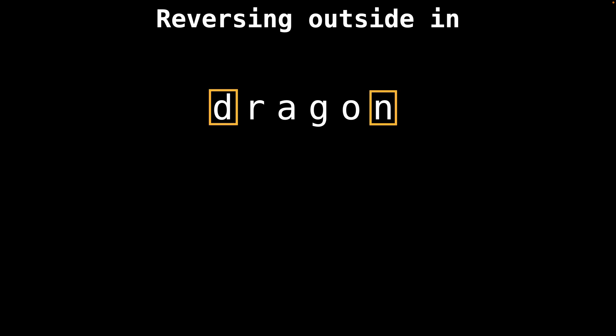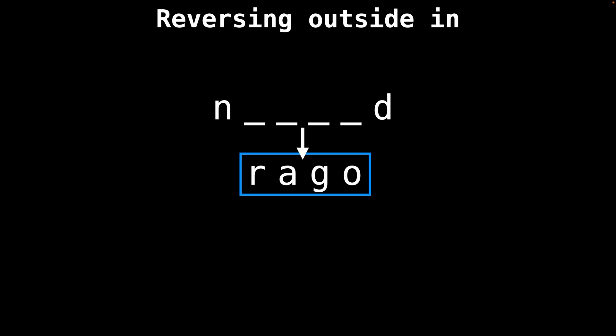Let's take the string dragon, for instance. If we take the front and the back characters of the string, then we can swap them. Once we have swapped the outer parts of the string, the only remaining portion that has not yet been reversed is the intersection highlighted in blue.